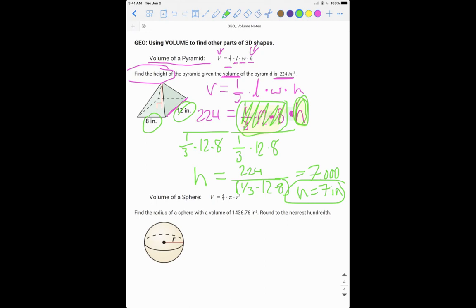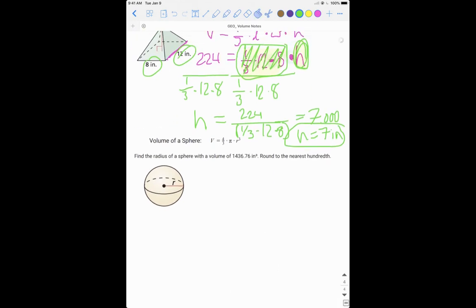So let's look at this example. Now we're given, find the radius. So up here we found our height. So now we want to find our radius. Given that this sphere has a volume, a very specific volume of 1,436.76 inches cubed. And it says round our answer to the nearest hundredth. So we'll see how that works at the end. Okay, so we've got our sphere equation, let's recall.